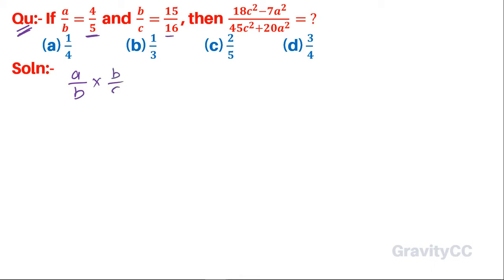times b/c equals 4/5 times 15/16. The b cancels away, so a/c equals 3/4. Since 5×3=15 and 4×4=16, this simplifies to 3/4.